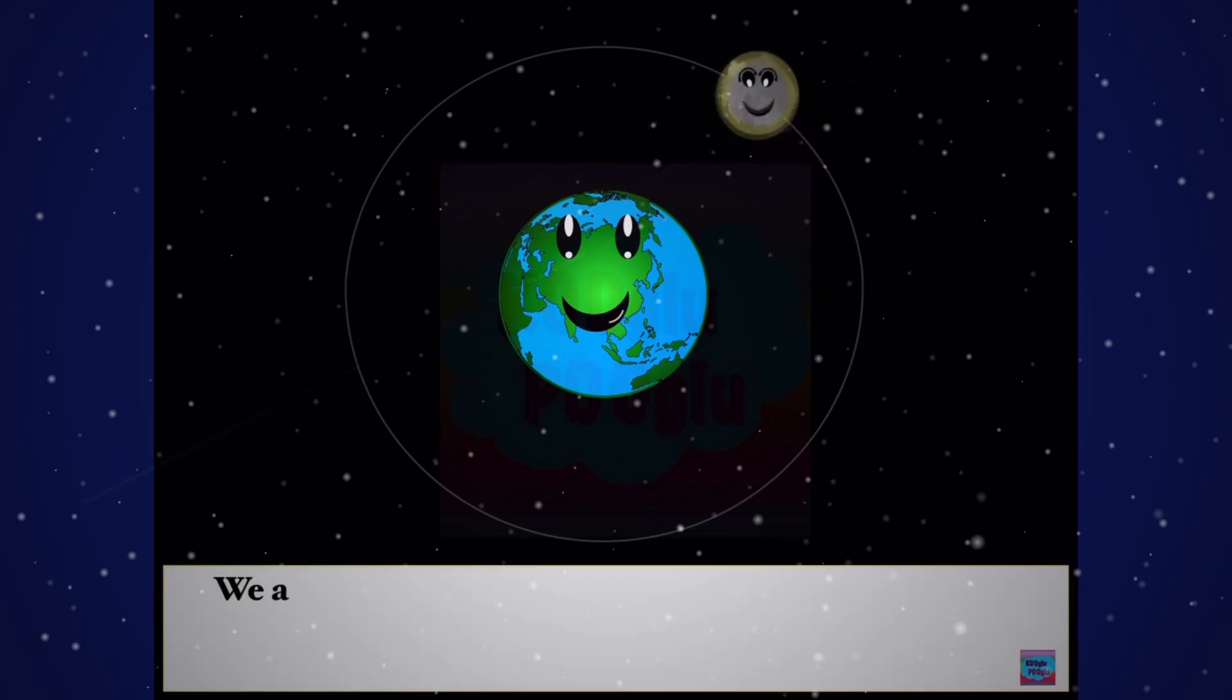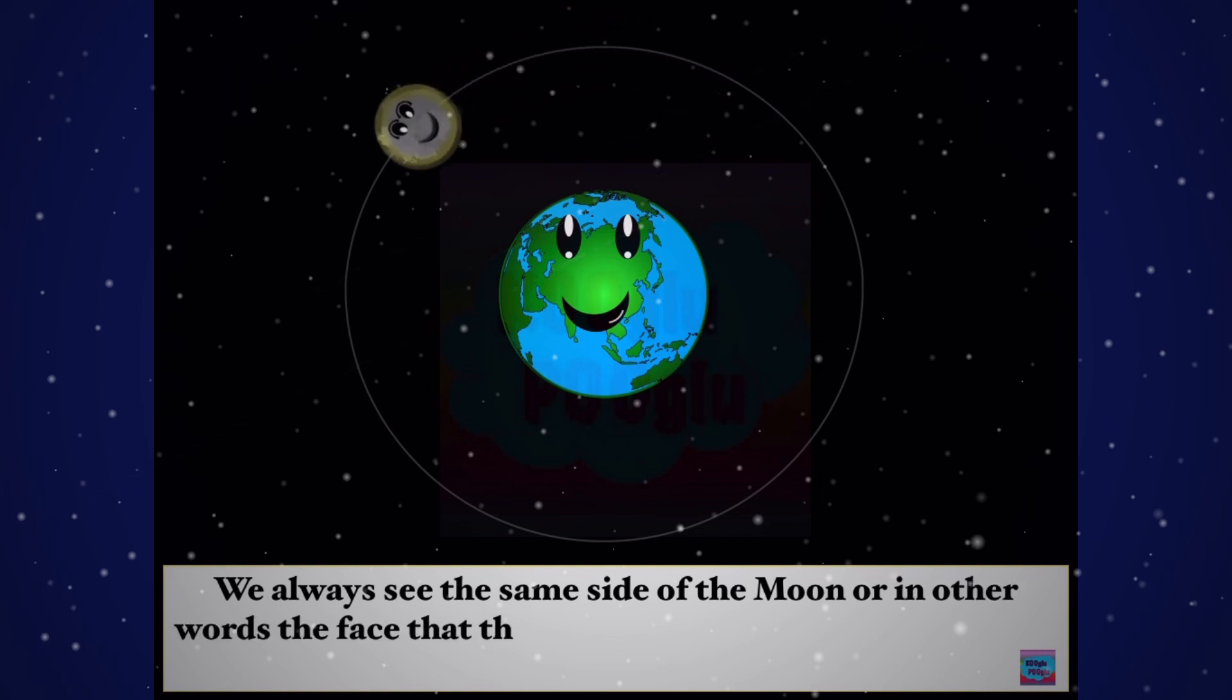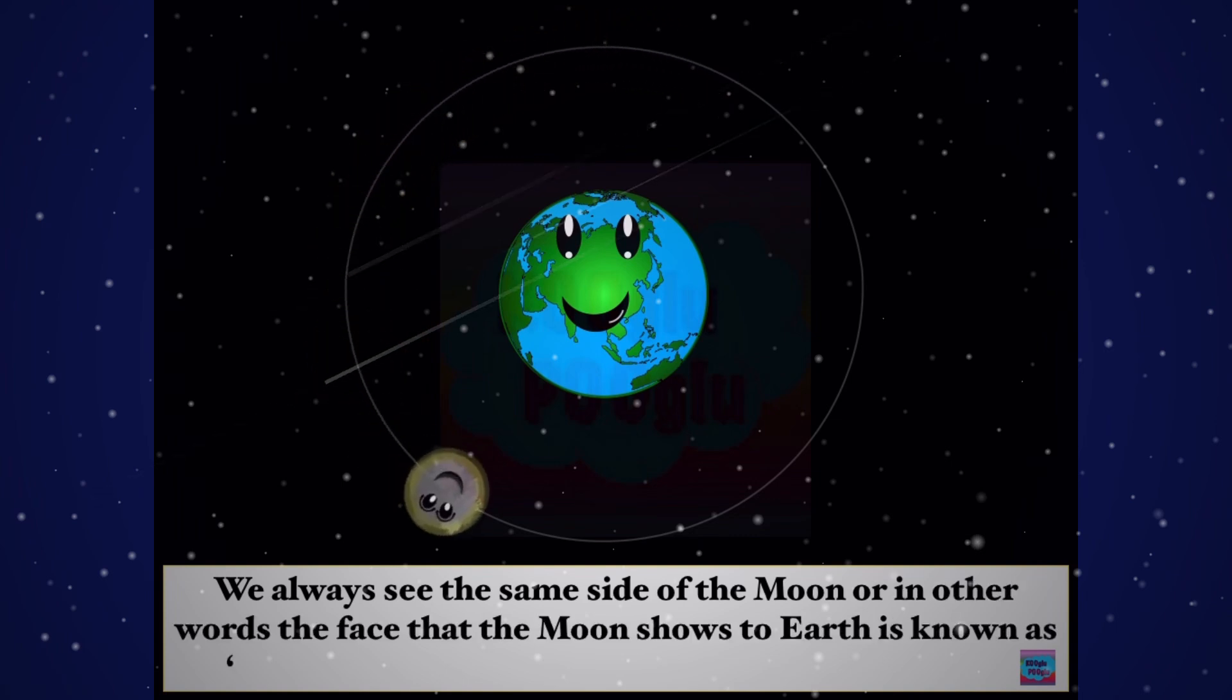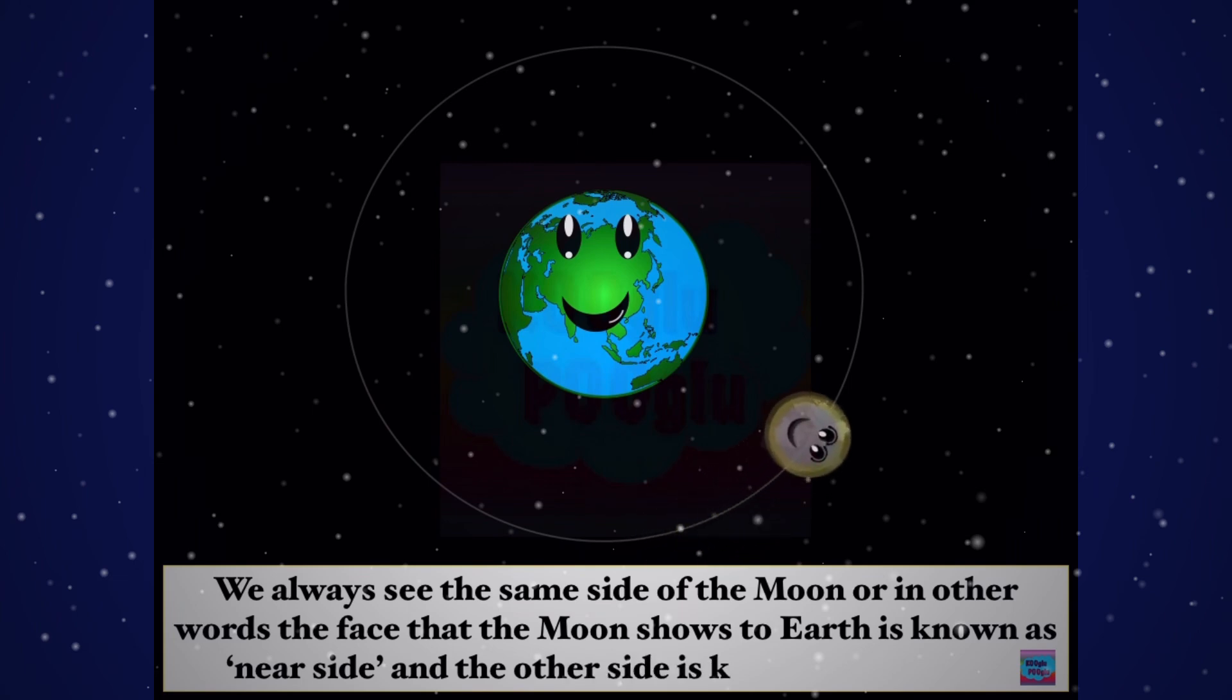We always see the same side of the Moon. In other words, the face that the Moon shows to Earth is known as the near side, and the other side is known as the far side. We always see the near side, never the far side.